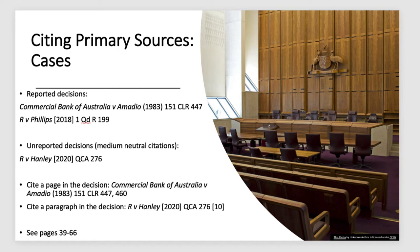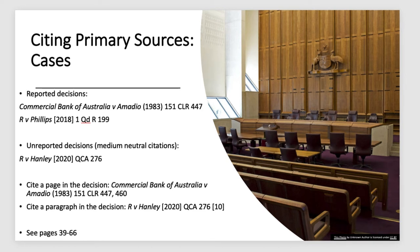Regardless of whether it's a criminal or civil matter, the parties' names are written the same way: all parties' names are italicized, and so is the 'v'. You then need to provide the year of the case in brackets. Some cases use round brackets and some use square brackets. Round brackets mean the reports are organized by volume number rather than year — the law reports on a shelf would be numerically ordered by volume number, with some volumes spanning more than one year.